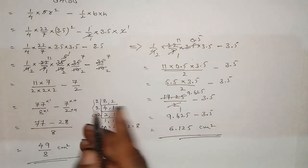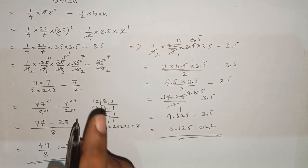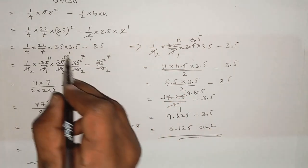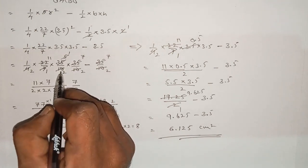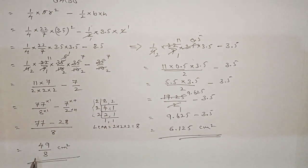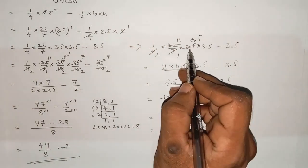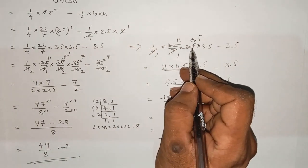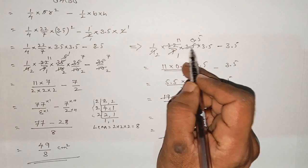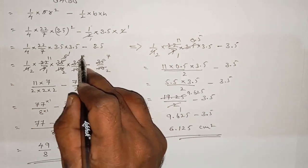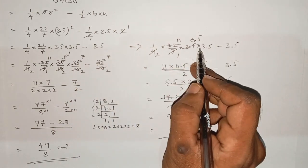This is the same as the fraction result. First problem solved: area of quadrant is 49/8 cm² — this matches the textbook answer. Both the decimal 6.125 cm² and the fraction 49/8 cm² are the same answer.